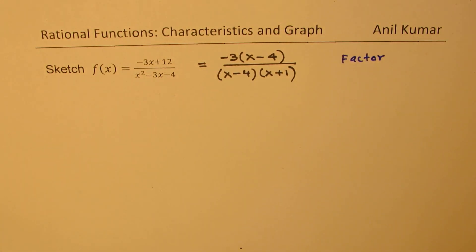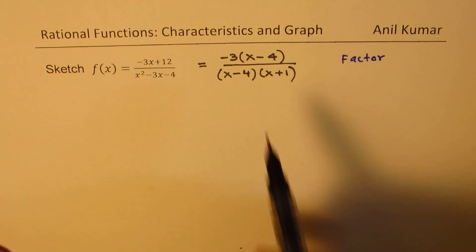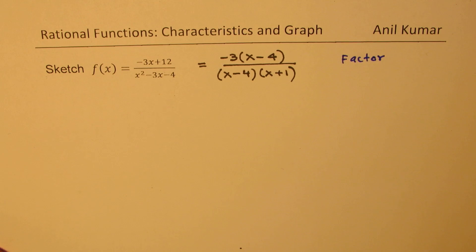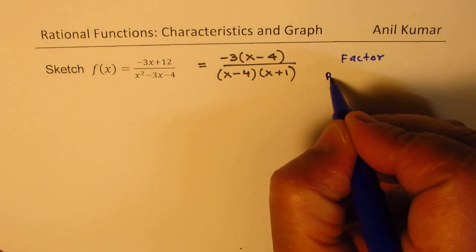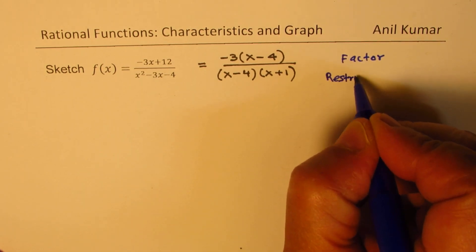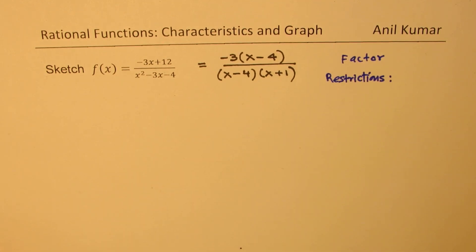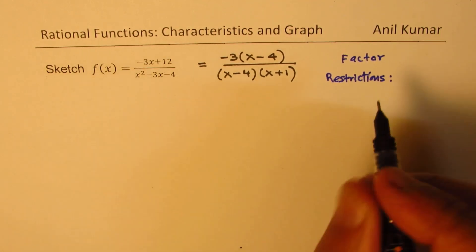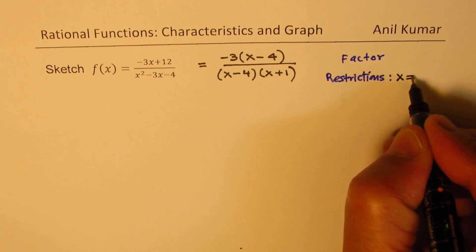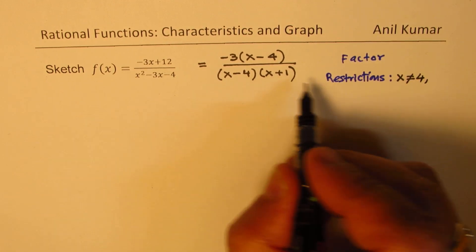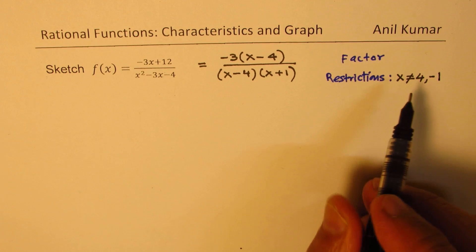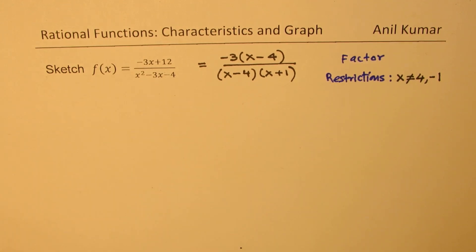Once you factor, it is very easy to see where the vertical asymptotes are and what the other restrictions are. So immediately from here we can write down the restrictions. The denominator cannot be 0, so we have x not equal to 4 and also not equal to minus 1. So there are two restrictions to this rational function.